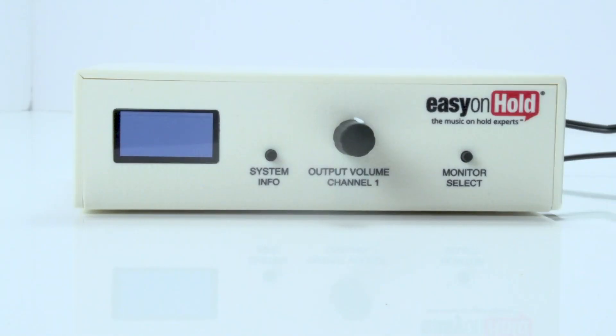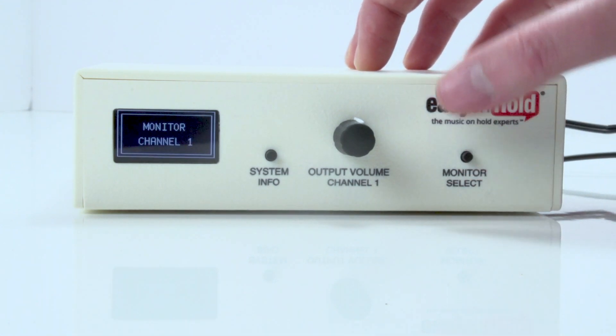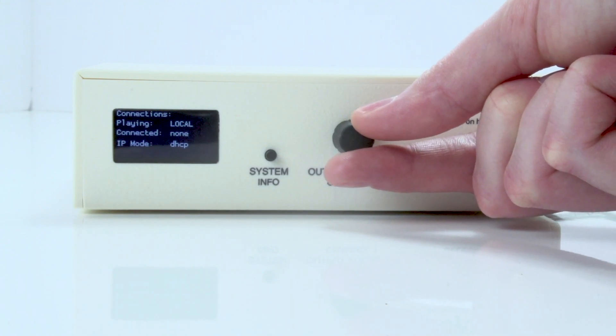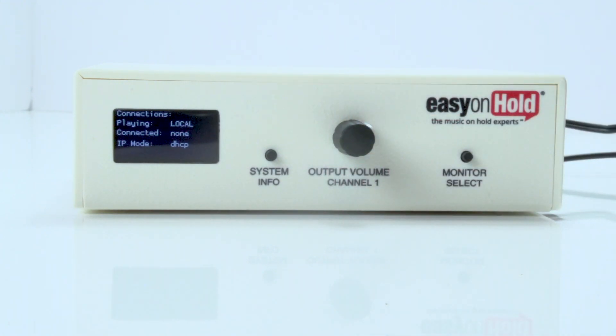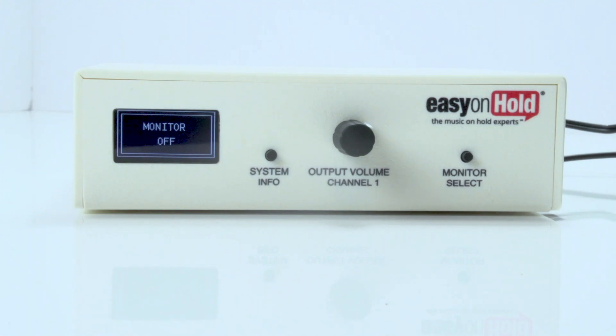When the unit powers up, you'll see the screen light up. Press the Monitor Select button once. This will allow you to hear the audio coming out of Channel 1. The volume knob will change the volume you hear on the device's speaker but also controls the sound going into your phone system. Tap the Monitor button two more times to turn it off.